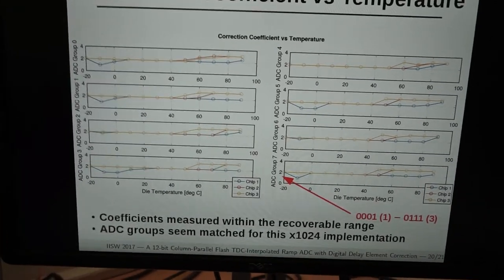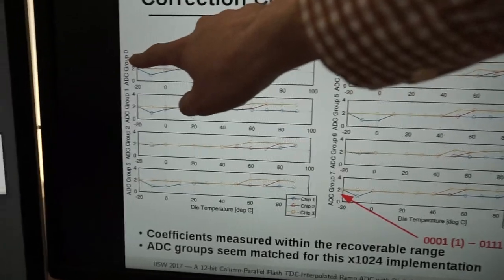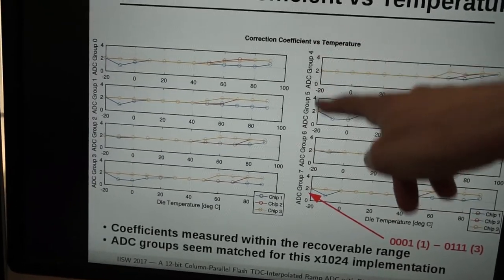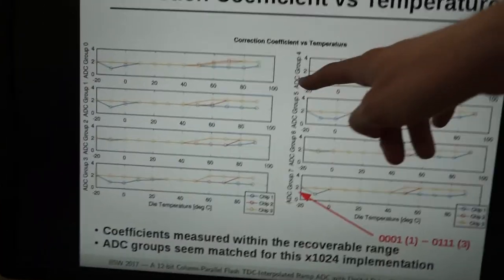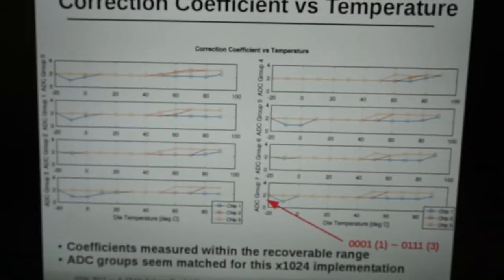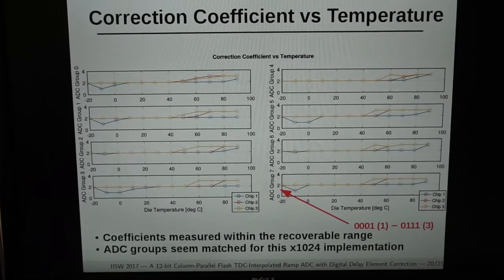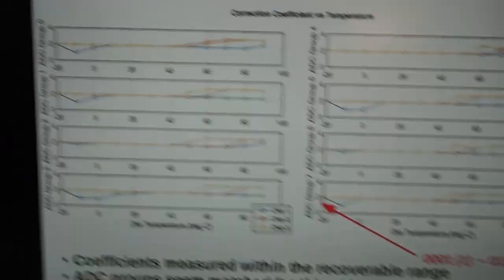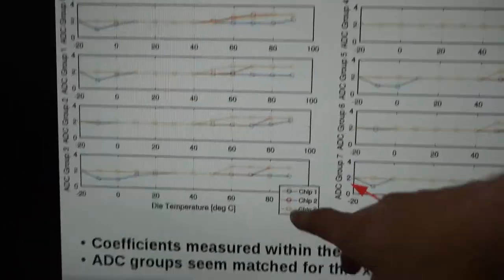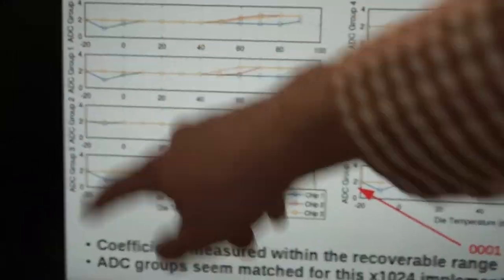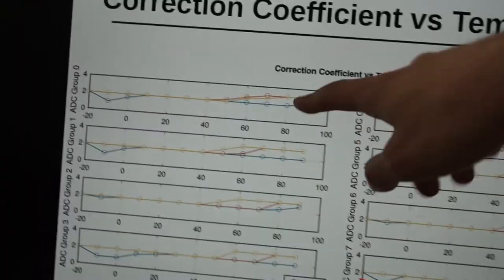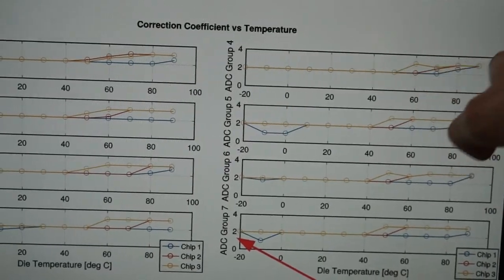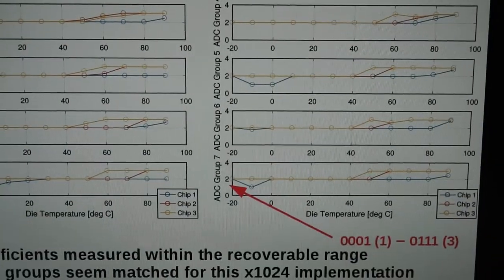We have eight ADC groups, ADC group 0 to ADC group 7. On the y-axis you see the measured captured correction coefficient versus the x-axis, which is temperature. You can see that the matching between the columns is fairly okay. At lower temperatures, the coefficient drops because the delays shrink. At high temperatures, the delays increase, which was expected. Each of these three curves shows individual data for three different chip samples.